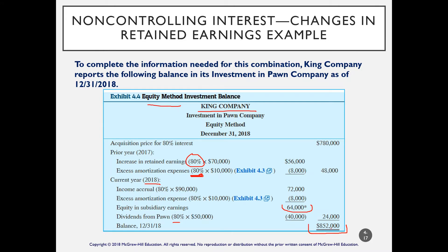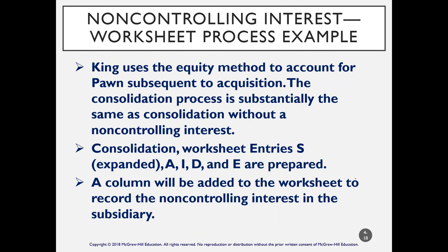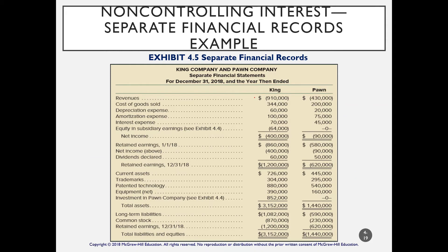Pay attention to these figures as we move on to the consolidation worksheet. We are presented with the financial statements of King and Pond and asked to consolidate them. We have equity in subsidiary earnings in King's records — the $64,000 calculated in the previous slide — and on the balance sheet, the investment in Pond Company of $852,000, also detailed in the previous slide.